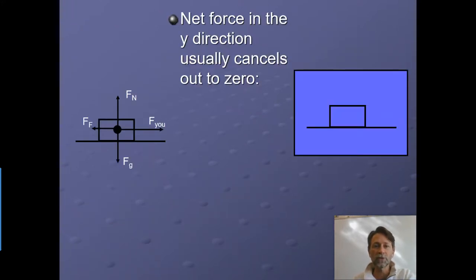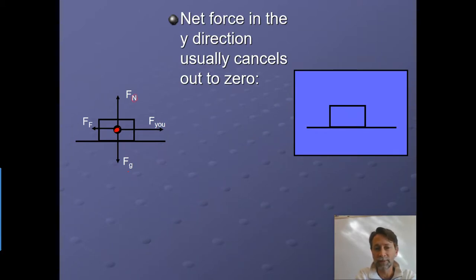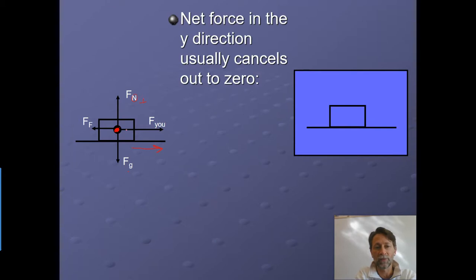The net force in the Y direction usually cancels out to zero. If we have a box, we put it into a force diagram — draw a dot in the middle and think through all forces acting on it. Gravity pulls it down. If I'm on a surface and not moving up or down, there's a normal force — N stands for normal, meaning perpendicular to the surface. There's friction acting against the motion, and the force pulling it forward. Since it's not moving up or down, the normal force and gravity cancel out: normal force equals gravity.